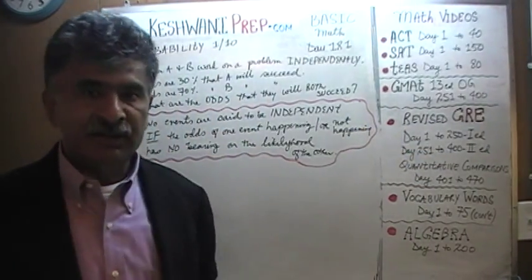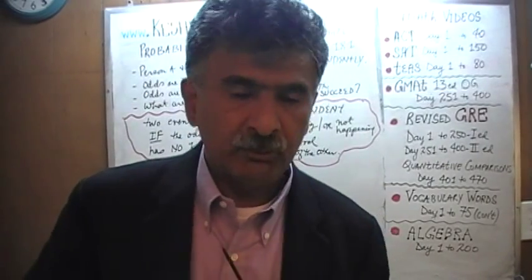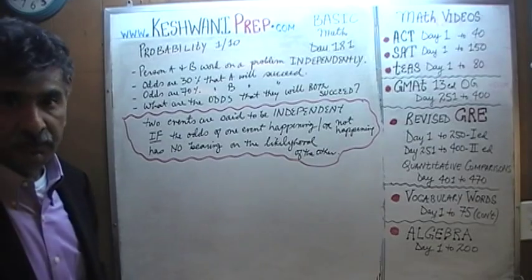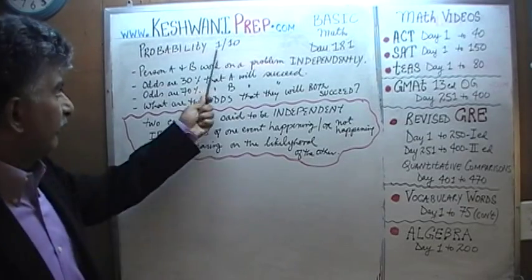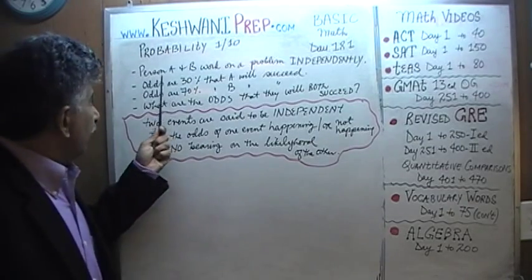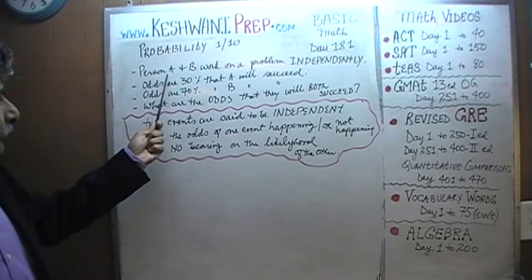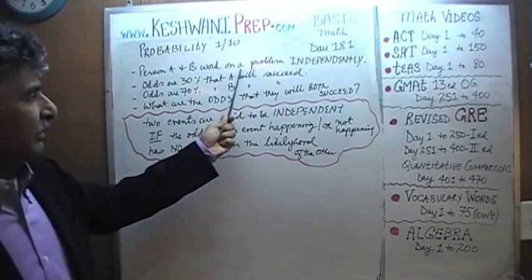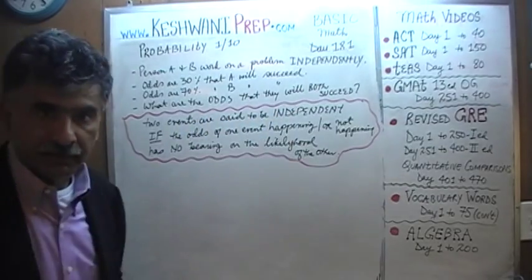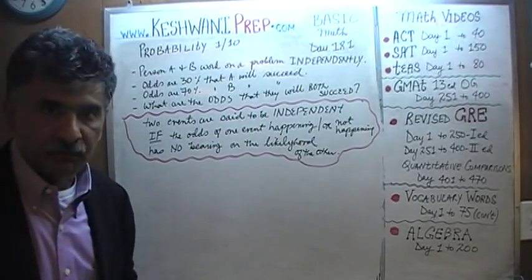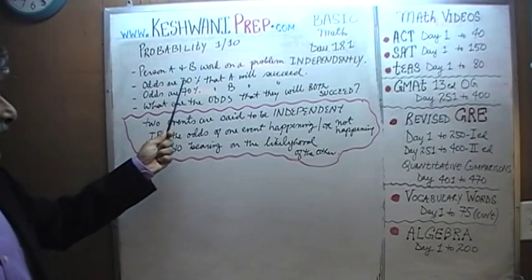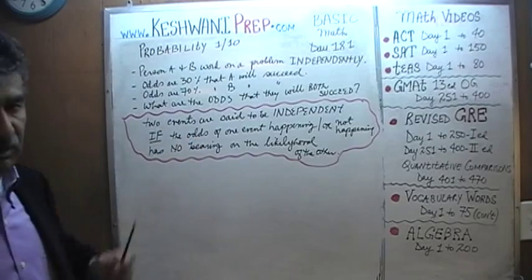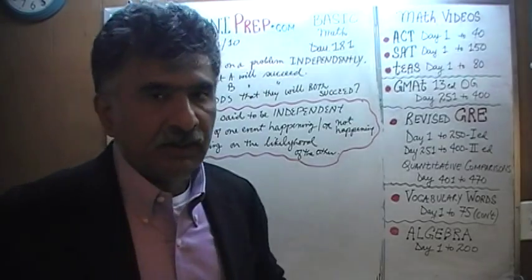Nothing more, nothing less — so let's get going. Today is our first lesson in a series of 10 videos. We are told that two people, person A and person B, are working on a problem. We are told they are working independently. The odds are 30% that A will succeed and 70% that B will succeed.